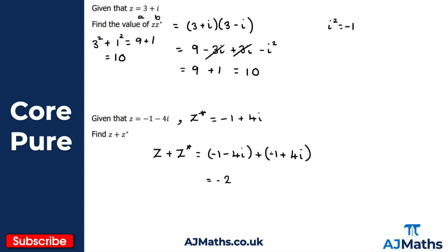Adding them together: z plus z* equals minus one minus four i, plus minus one plus four i. For the real parts: minus one plus minus one gives minus two. For the imaginary parts: minus four i plus four i cancel, so we're left with minus two.